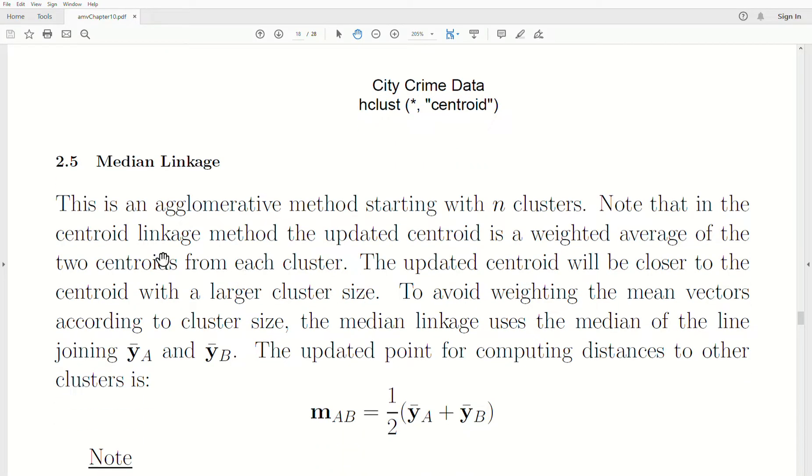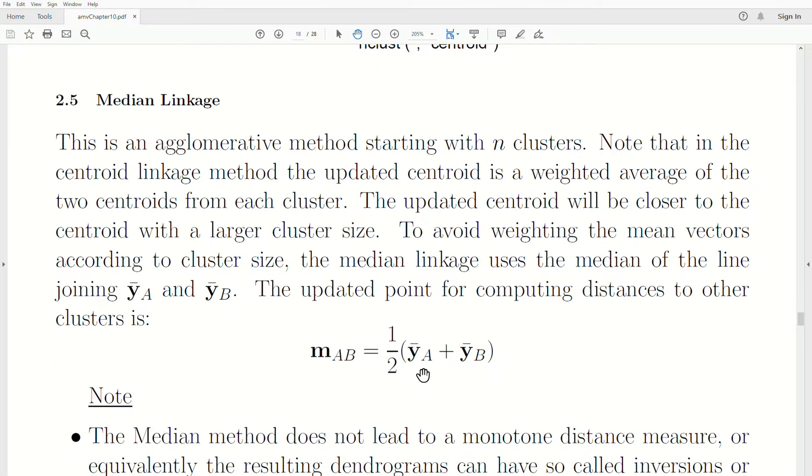Now let's look at the median linkage method for hierarchical clustering. And again, this is an agglomerative method starting with n clusters. Now note that in the centroid linkage methods, the updated centroid is a weighted average between the two centroids from each cluster. Now the updated centroid will be closer to the centroid with a larger cluster size. Now to avoid this weighting of the mean vectors according to cluster size, a median linkage method was developed. And it's basically we use the median of the line joining the two centroids. And so mathematically, this is how you describe it.